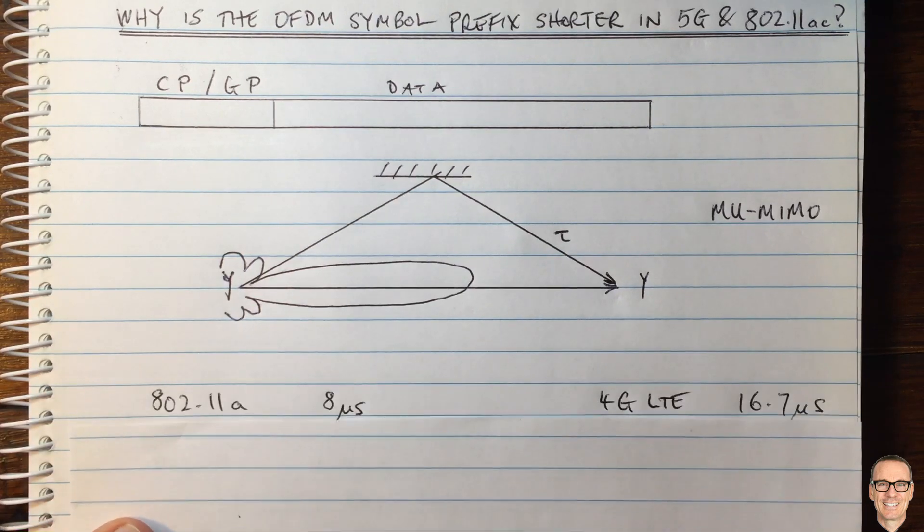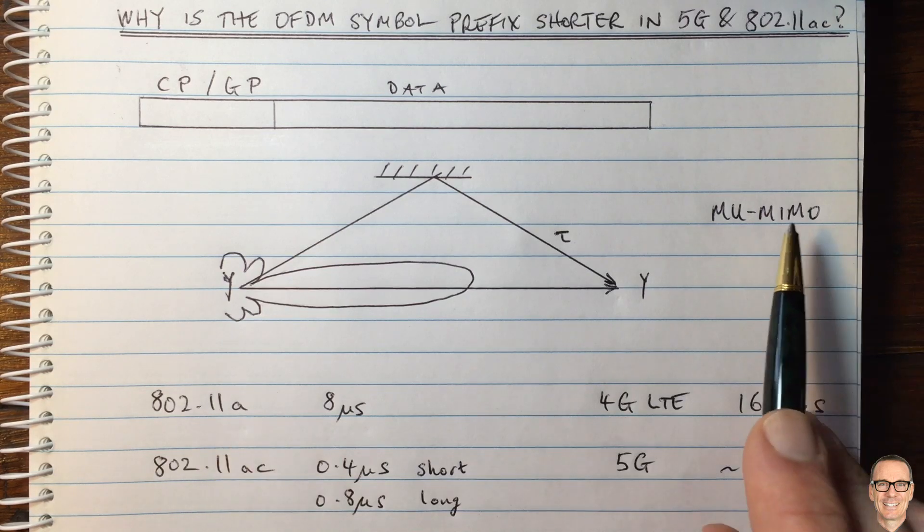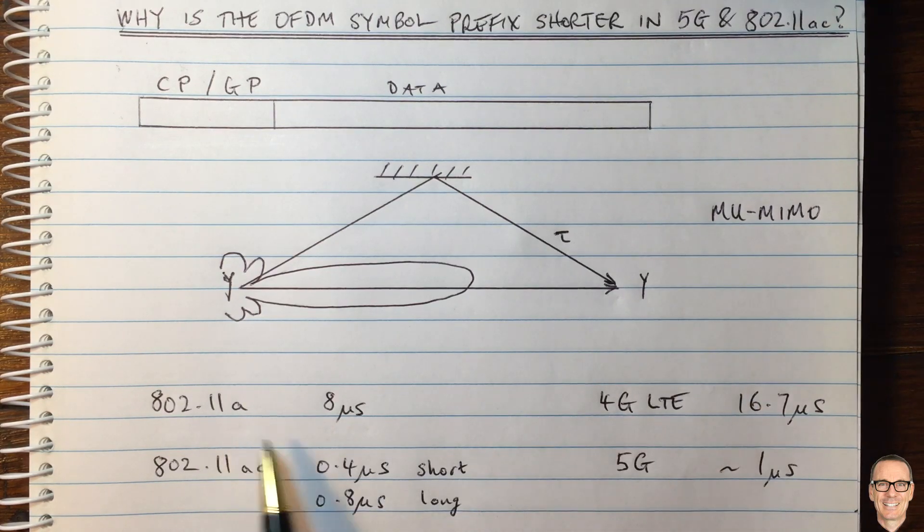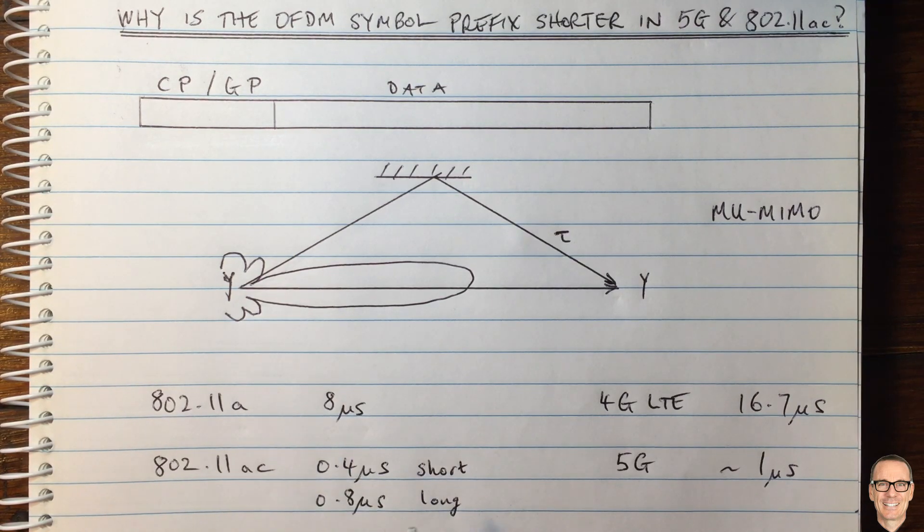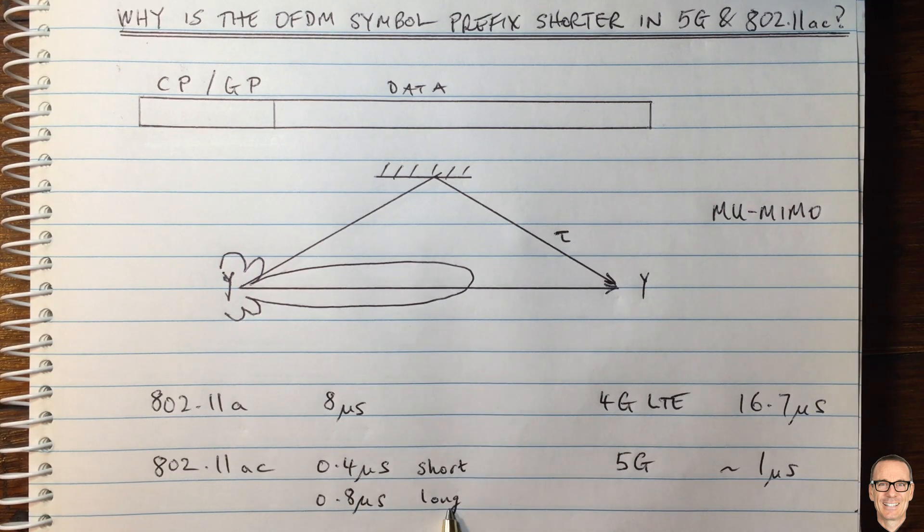Let's look at some example values. In the 802.11a Wi-Fi system it was not a MIMO system and it had a prefix of 8 microseconds. In the 802.11ac system it's either 0.4 microseconds for a short or normal prefix or 0.8 microseconds for a long prefix. So it's an order of magnitude shorter.